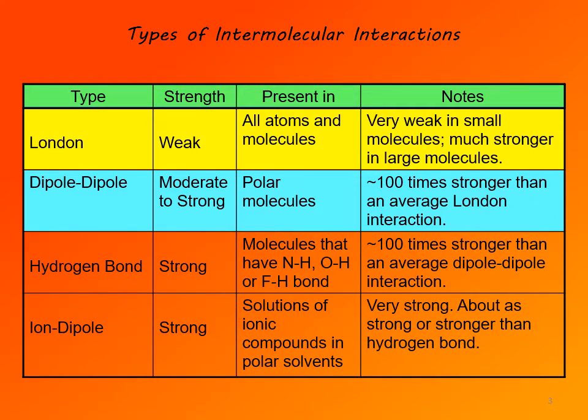So for that reason, when we are considering polar molecules, even though they exhibit London interactions — because London interactions are present in all molecules — and dipole-dipole interactions, we usually consider only dipole-dipole interactions, because ignoring London interactions introduces very small error. So they can be safely ignored.